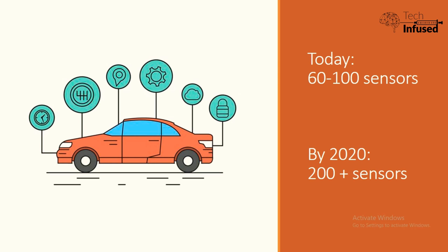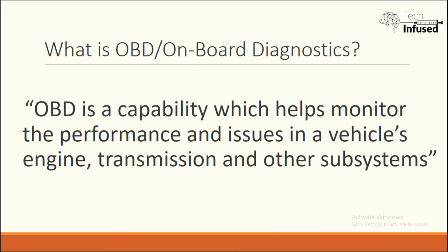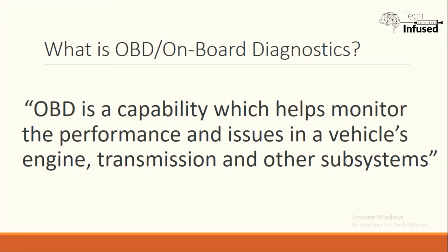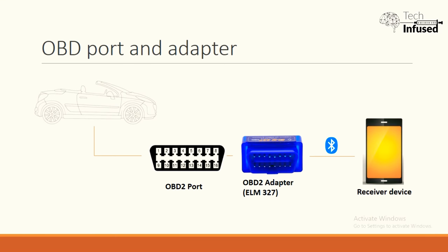It is said that by 2020, when new vehicles are manufactured, the number of sensors will grow up to 200. So in simple layman's terms, OBD is a capability which helps monitor the performance and issues in a vehicle's engine, transmission, and other subsystems. Now let's look at how the data is collected and extracted for our use.